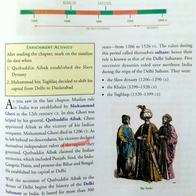As Mohamed Ghori had no descendant and he died in 1206 CE, his viceroys declared themselves as the independent rulers of the regions they used to govern. Qutubuddin Aibak claimed Punjab, Sindh, the Indo-Gangetic plains and parts of Bihar and Bengal. His capital was at Delhi. The accession of Delhi by Qutubuddin Aibak began the history of Delhi Sultanate in India. Here, accession meant attainment of a position of rank or power. Please note it down in your book.